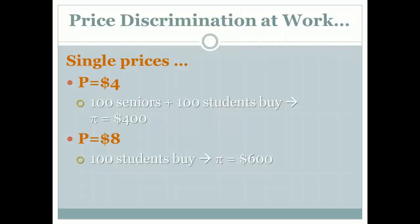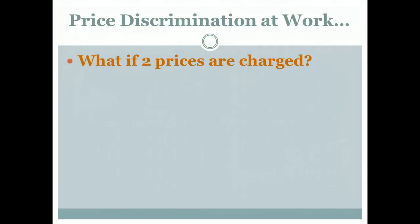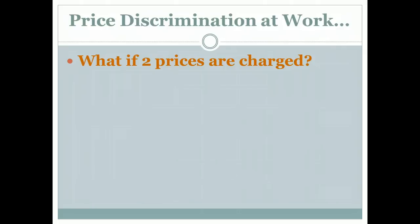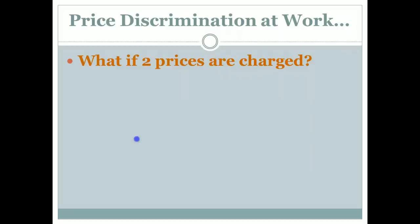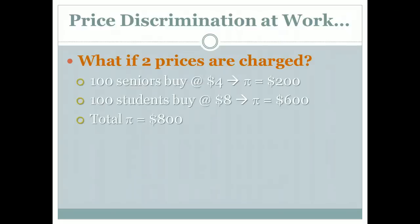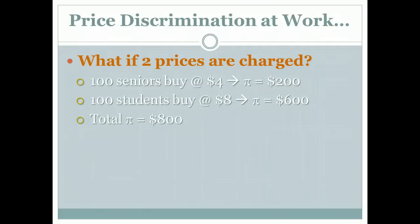But is that the best they can do? What if instead of charging a single price they were a price discriminator and charged $4 for some and $8 for others? If they price discriminate, they'd have 100 seniors buying meals at $4 apiece — a profit of $200 from seniors — and 100 students buying at $8 apiece — a profit of $600. Adding the two together gives $800 in total profit, which is better than charging any single price. So price discrimination is very helpful for Denny's because they can increase their profits.